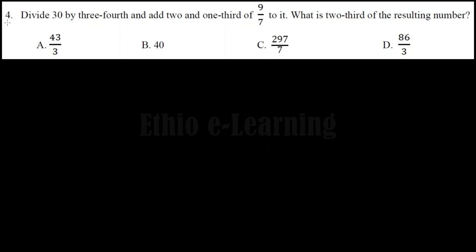Tiyake kutra arad: divide 30 by 3 fourths and add 2 and 1 third of 9 over 7 to it. What is 2 third of the resulting number? Tiyake kutra arad, divide 30 by 3 fourths and add 2 and 1 third of 9 over 7 to it.